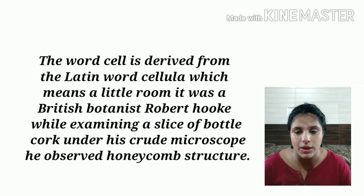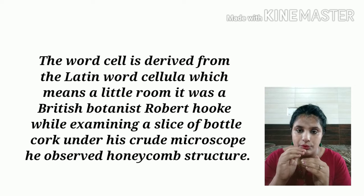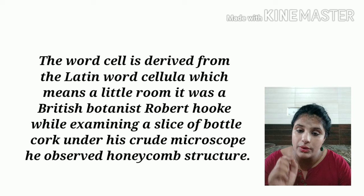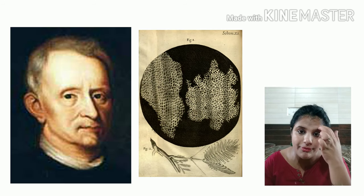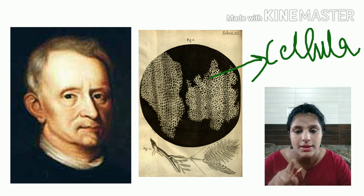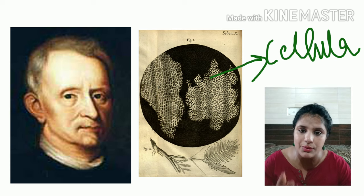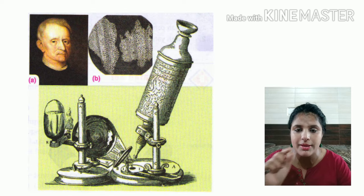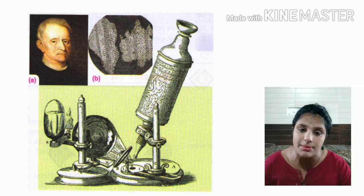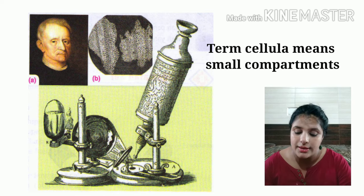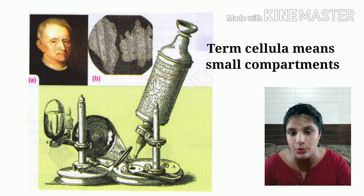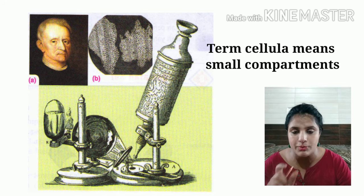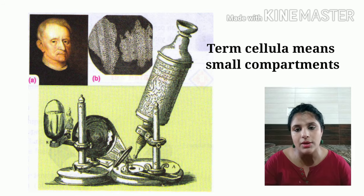There was a scientist Robert Hooke who was working on cork — cork is a kind of dead tissue from the bark of a tree. He studied cork with the help of a microscope and found that this cork is made up of small compartments, hexagonal in shape. He found that the entire bark is made up of small rooms or chambers. In Latin, that compartment or small room is known as 'cellula,' so he termed them cellula. Later, this term 'cellula' was transferred to the word 'cell.'